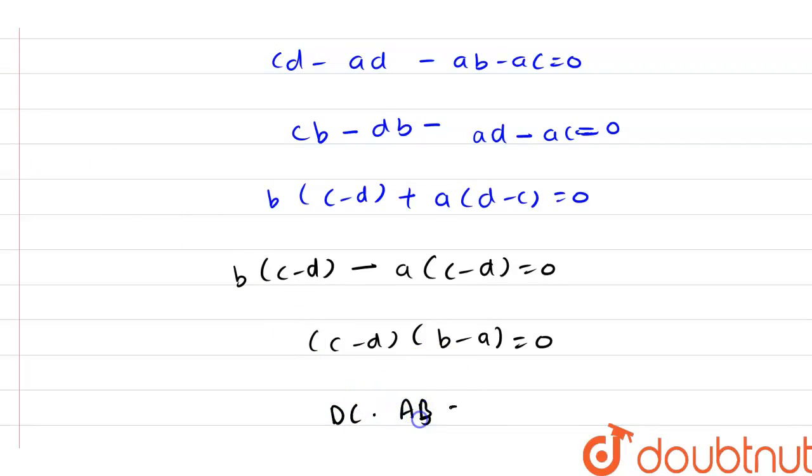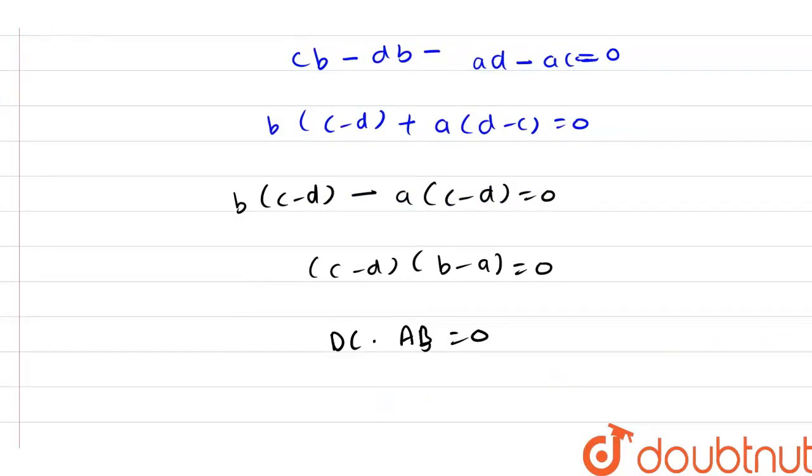From here we have that the third pair of opposite edges AB and CD are also perpendicular to each other.